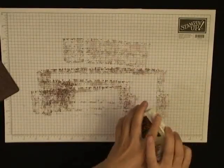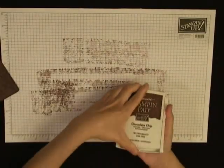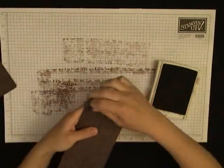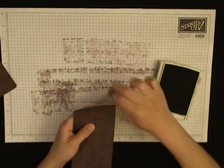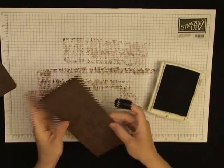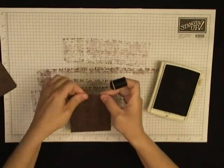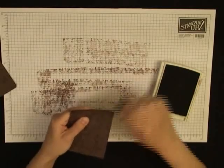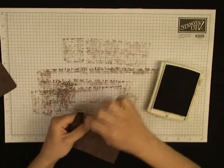The next step is to sponge all the edges of the chocolate chip card stock with chocolate chip ink using a sponge dauber. Just ink it and rub along all of the edges of all six pieces, and also if you want to fold it on your score lines you just made, you can add some ink on the scored line as well.